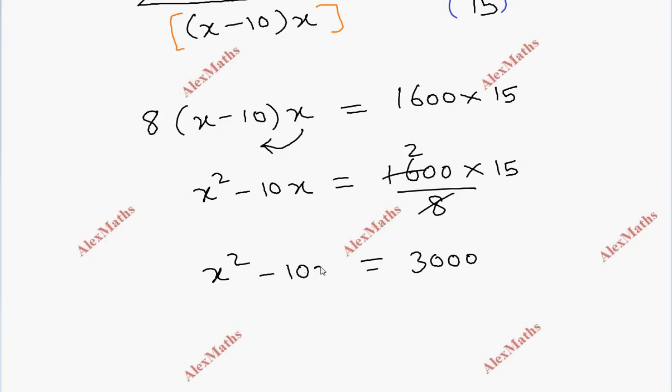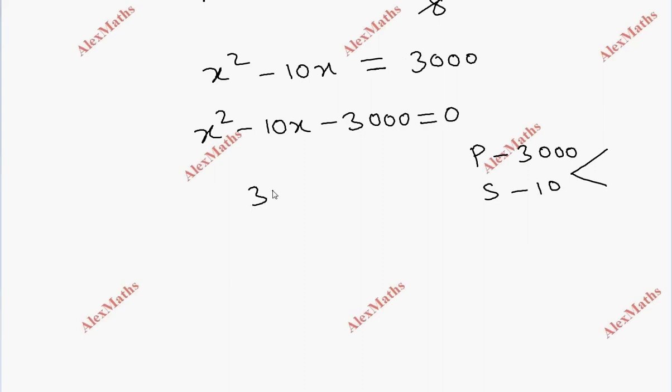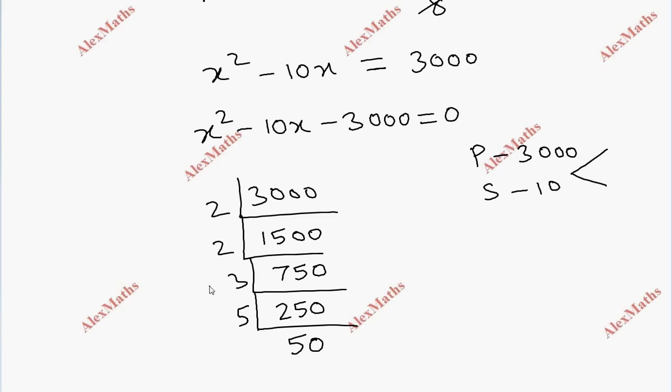Now we have a quadratic expression. In proper form: x squared minus 10x minus 3000 equals zero. We need product of minus 3000 and sum of minus 10. The factors are 60 and 50, where minus 60 plus 50 gives minus 10.